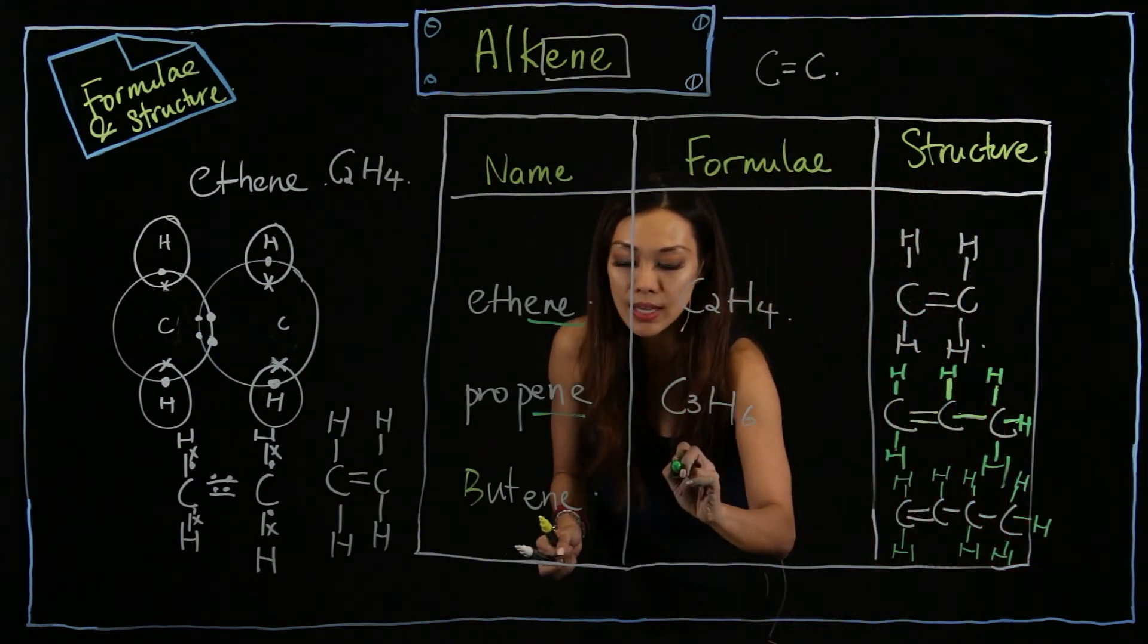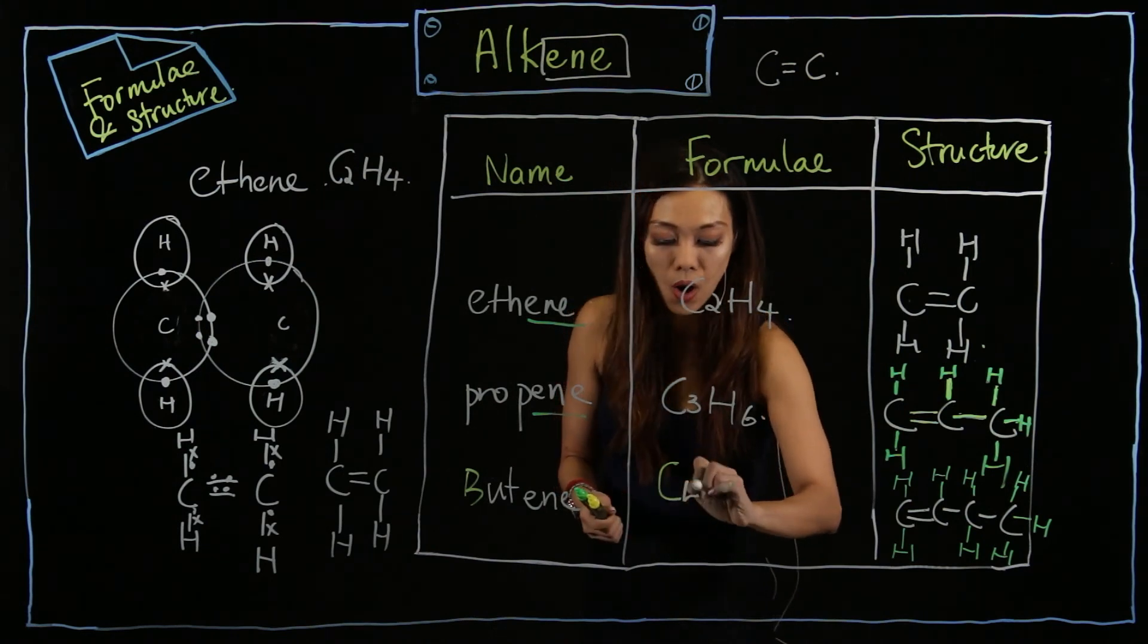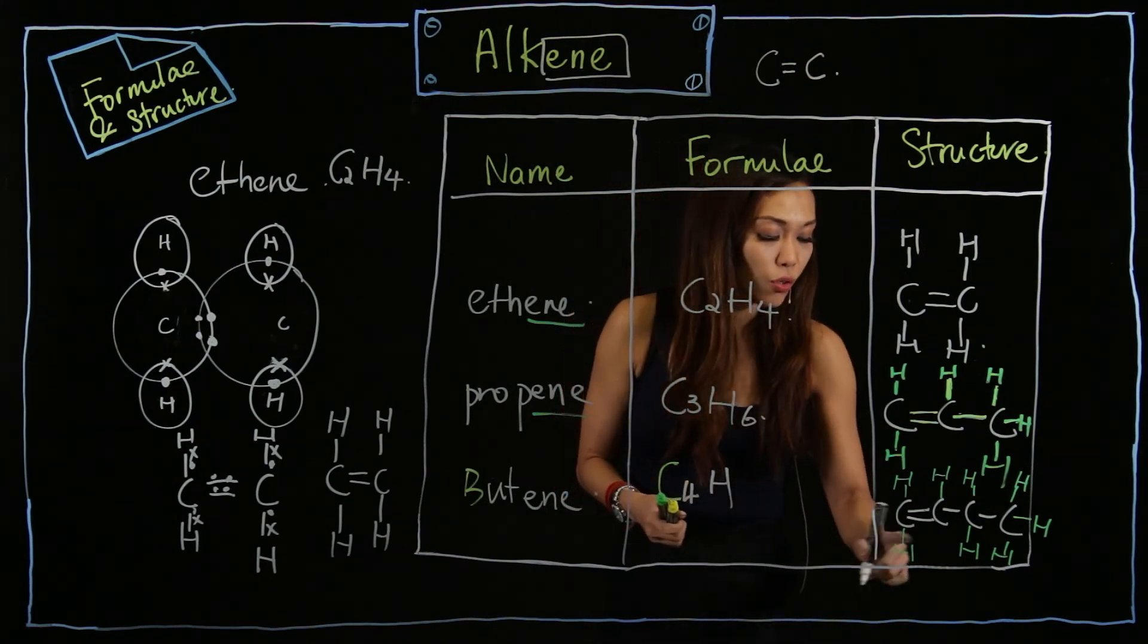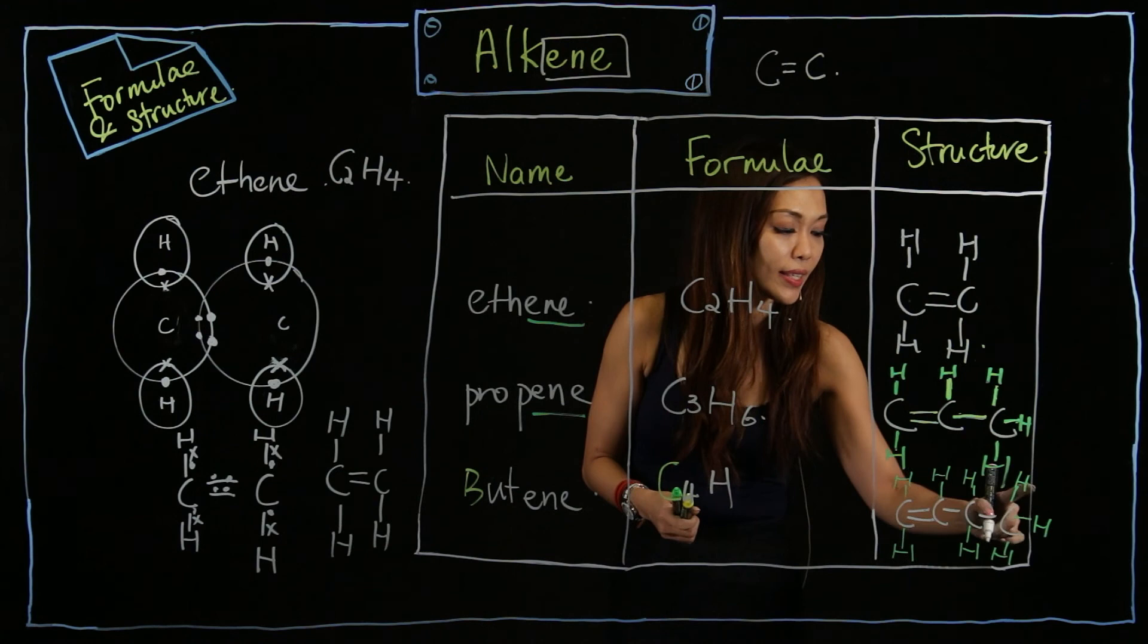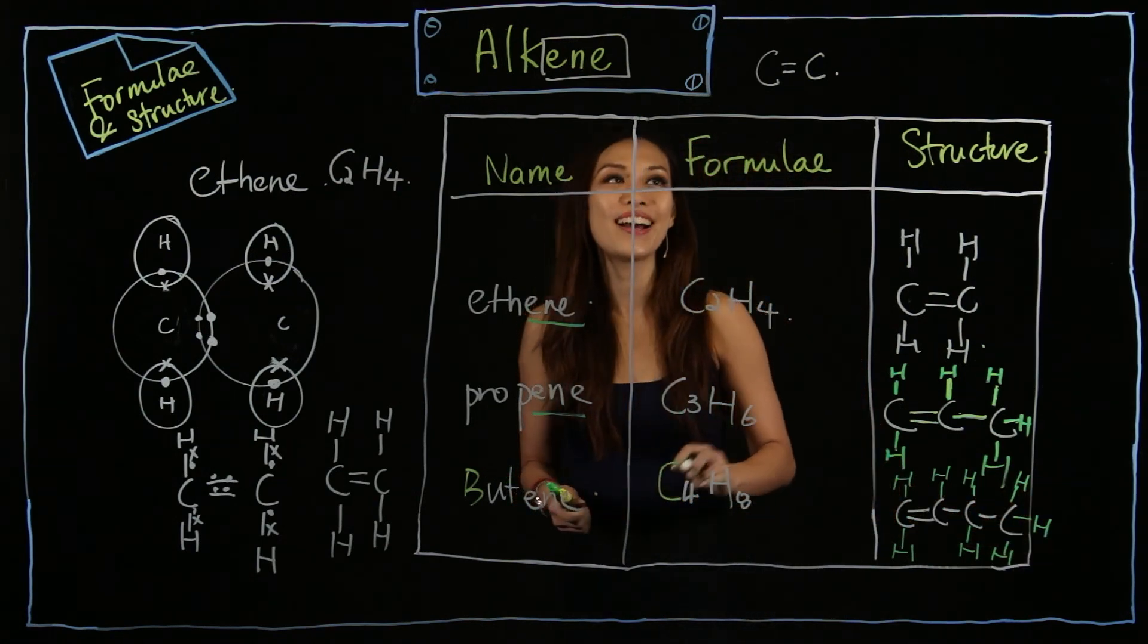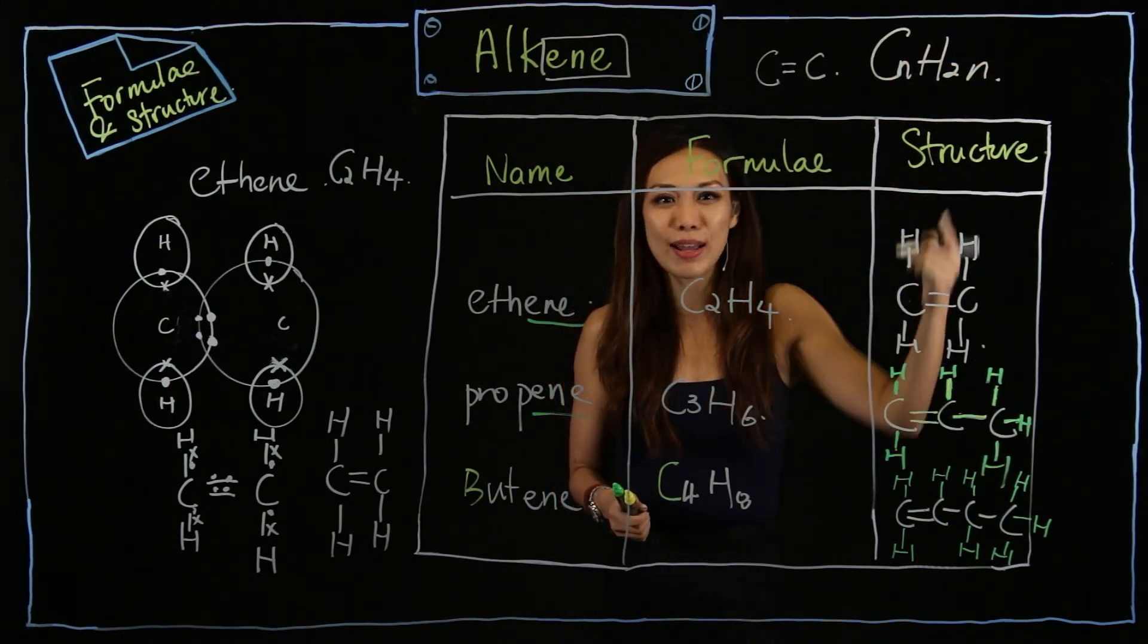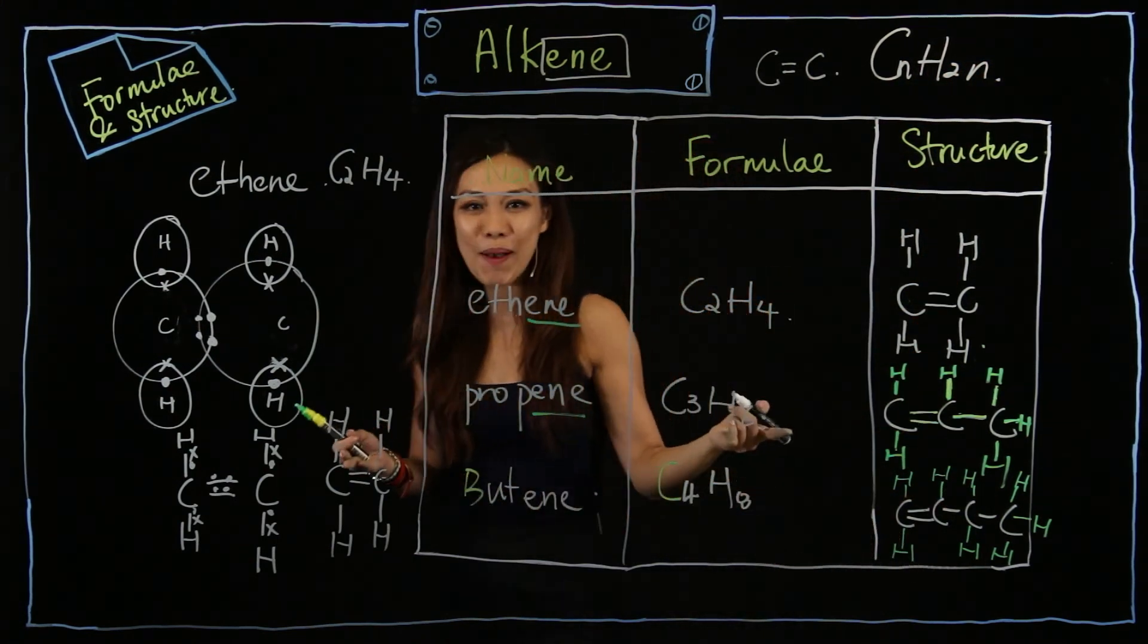Let's count. C - four. H - one, two, three, four, five, six, seven, eight. C4H8. And the general formula is none other than CnH2n. Does it look like a number pattern now? So, did you get this part?